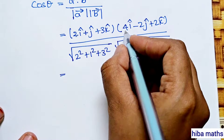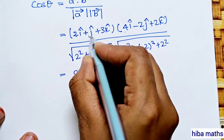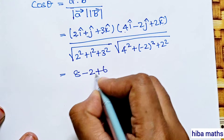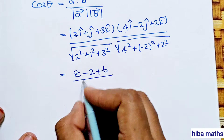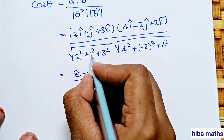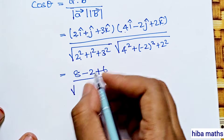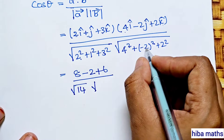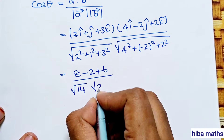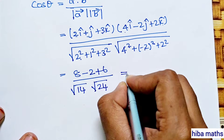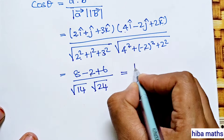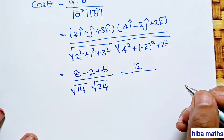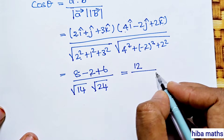Computing the dot product: 2 times 4 is 8, 1 times minus 2 is minus 2, 3 times 2 is 6. Divided by root of 4 plus 1 plus 9 equals root of 14, into root of 16 plus 4 plus 4 equals root of 24. Numerator: 8 minus 2 plus 6 equals 12.